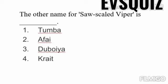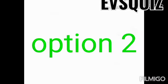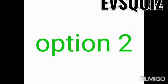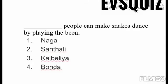The correct answer for the other name of short scaled viper is option number two. Moving to the next question: '___ people can make a snake dance by playing the bean.' Option one: naga. Option two: shantali. Option three: calvelia. Option four: bonja peoples. Time starts now.